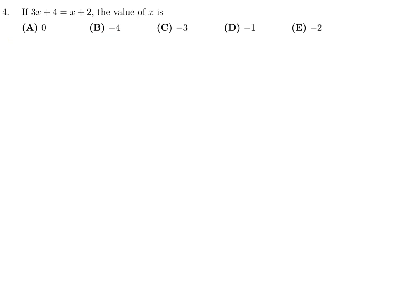If 3x + 4 = x + 2, the value of x is: So, 2x = -2. x = -2/2. x = -1. Number 4, the answer is D.